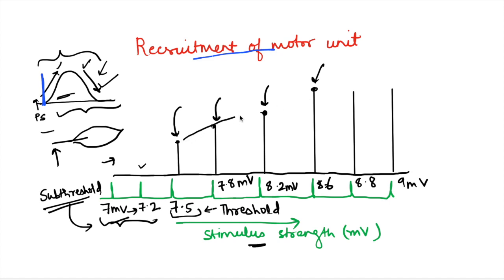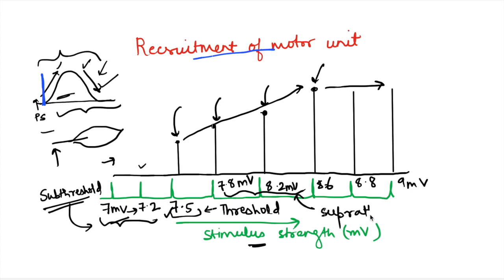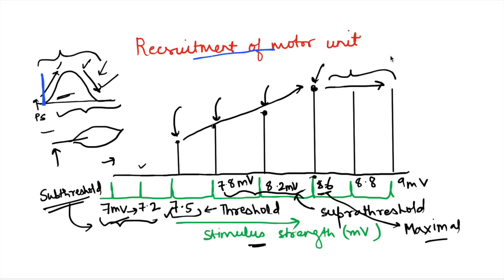After a certain point, at around 8.6 mV, the strength of contraction no longer increases further. The stimulus at which maximum strength of contraction is reached is called the maximal stimulus. These intermediate stimuli between threshold and maximal are supra-threshold stimuli. Above the maximal stimulus — at 8.8 or 9 mV — even though we increase the strength further, contraction does not increase; these are called supra-maximal stimuli.